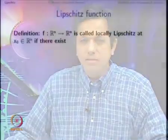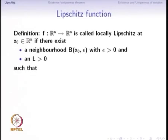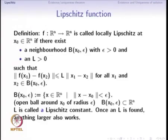Welcome to lecture number 4 of Non-linear Dynamical Systems. We had just begun seeing what a Lipschitz function is, so let us recapitulate the definition. A function f from R^n to R^m is called locally Lipschitz at a point x0 in R^n if there exists a neighborhood — a ball centered around x0 with radius epsilon greater than 0 — and some constant L such that the Lipschitz inequality is satisfied for all points x1 and x2 in that neighborhood of x0.